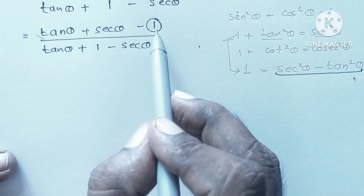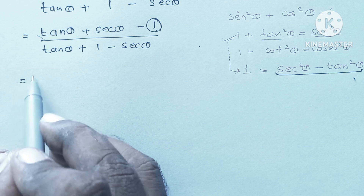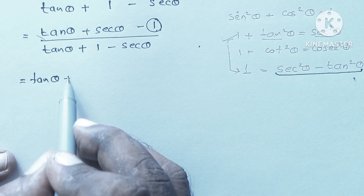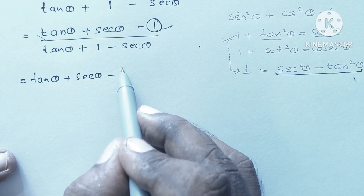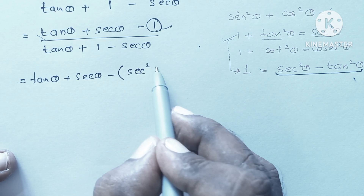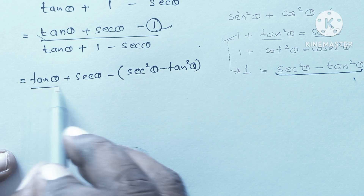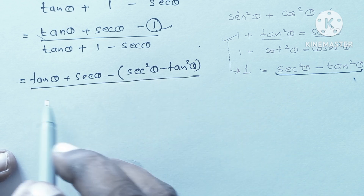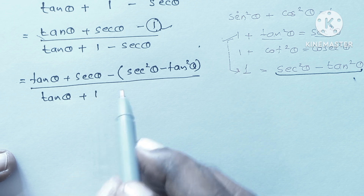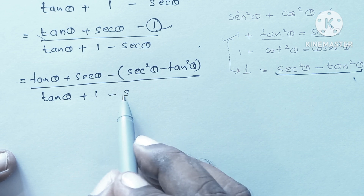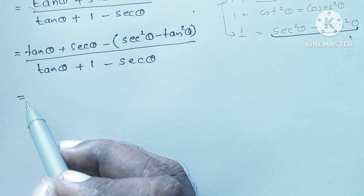Remember, replace only the numerator's 1. So it turns to: tan θ + sec θ minus this 1, which is replaced as sec²θ - tan²θ, divided by the denominator which stays as tan θ + 1 - sec θ.